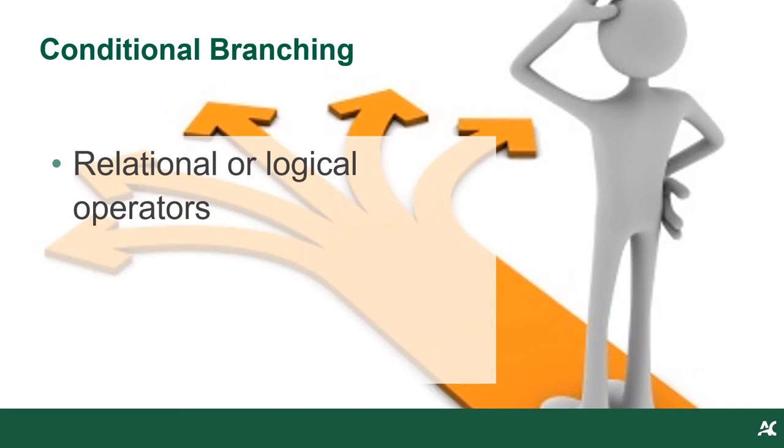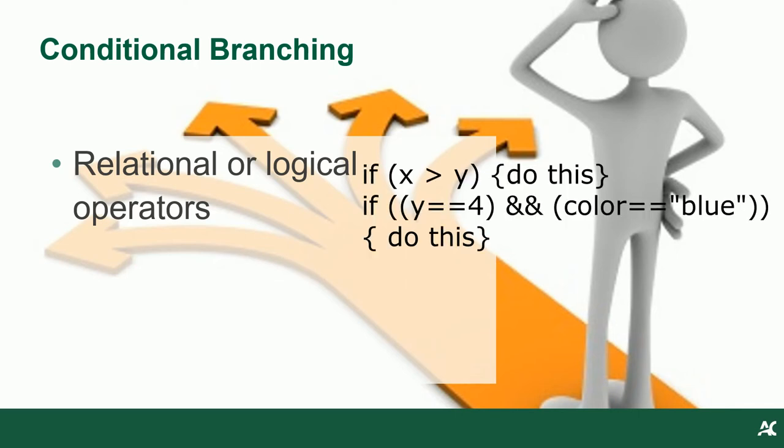The test condition involves some sort of relational or logical comparison. For example, if x is greater than y, then do these operations. Or if y is equal to 4 and color is blue, then do these operations. There are two things that I want you to notice about this kind of statement. First, the condition is always evaluated into a boolean state, meaning it is either true or false. This means that I can nest conditional branch statements together to create fairly complex logic, but the basis is always a simple true or false.